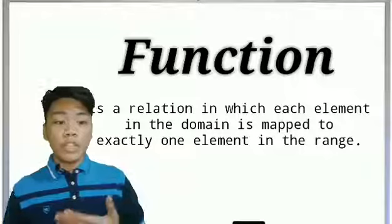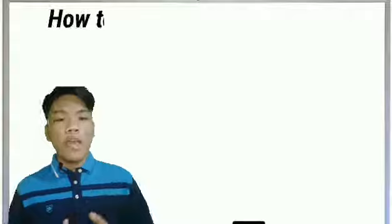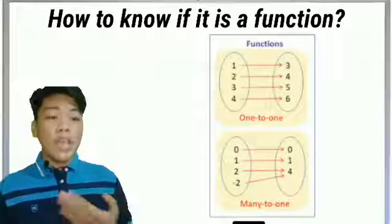But now, what is a function? A function is a relation in which each element in the domain is mapped to exactly one element in the range. How do we know if it is a function? It is a function if each member in the domain is assigned to exactly one member of the range.